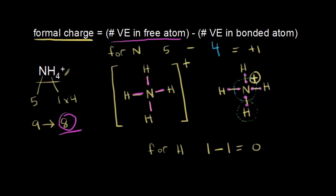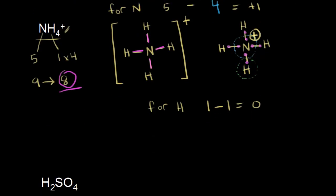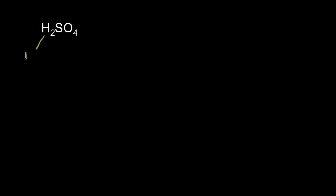Let's see how formal charge applies to actually affecting our final dot structure, using sulfuric acid as an example. The first step is to calculate the total number of valence electrons. Each hydrogen is 1, and there are 2 of them. Sulfur is in group 6, so it has 6 valence electrons. Oxygen is also in group 6, and we have 4 of them, so 6 times 4 is 24. So we have 24 plus 6 plus 2, giving us 32 valence electrons to represent in the dot structure for sulfuric acid.